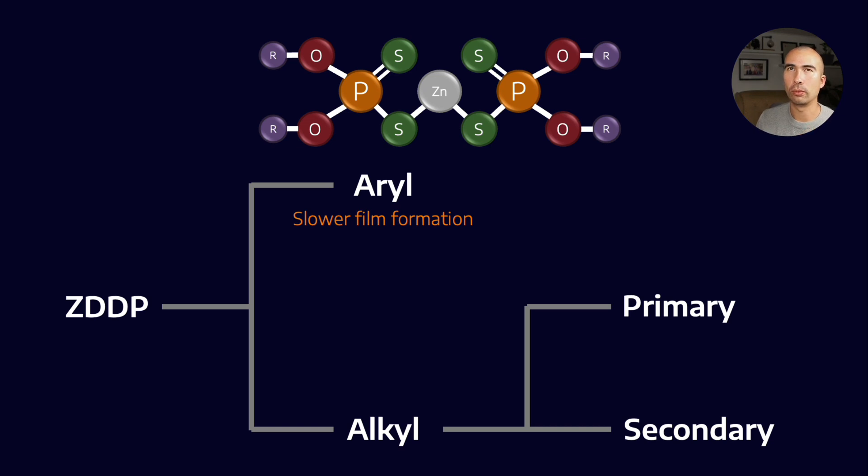What we have found, or what is contained in some of the literature that I've read anyway, there's a little bit of debate on it, is that aryls are slower to form anti-wear films, but primary ZDDPs tend to volatilize off quicker.